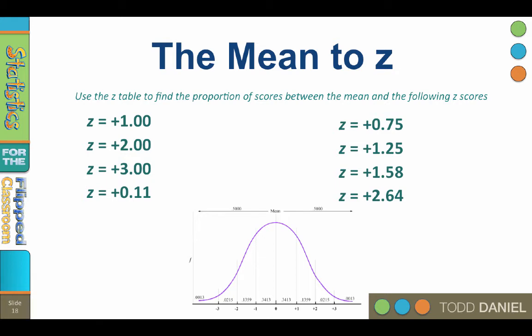For a z of positive 1.00, the proportion between the mean and that z is 0.3413. For z equals positive 2.00, 0.4772. For z equals positive 3.00, 0.4987. For z equals 0.11, 0.0438.